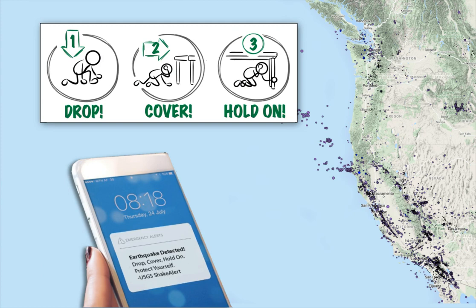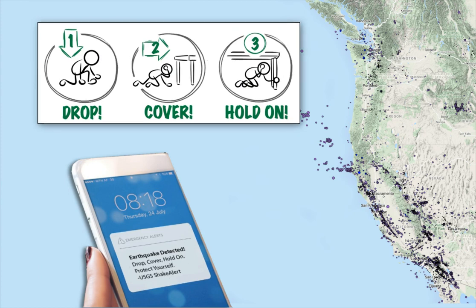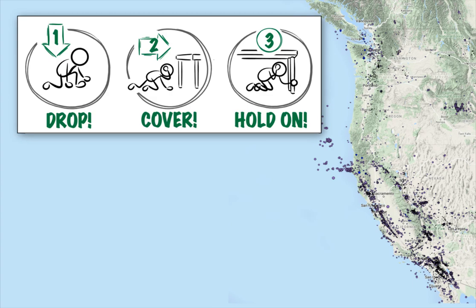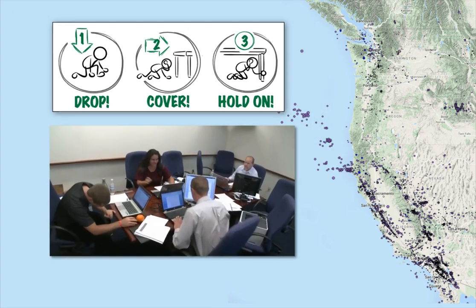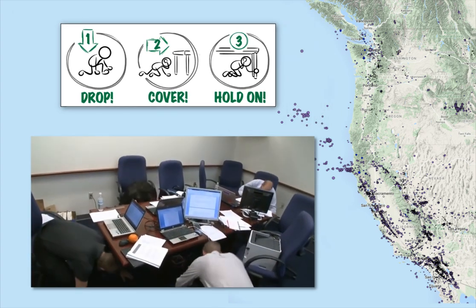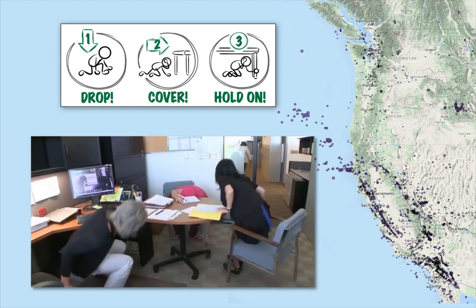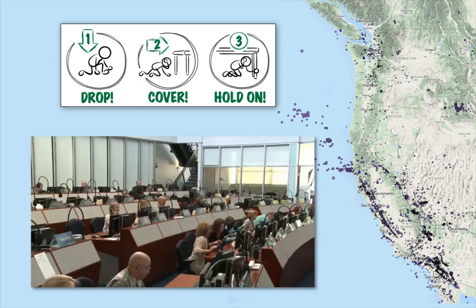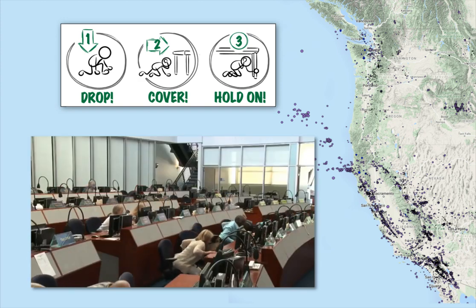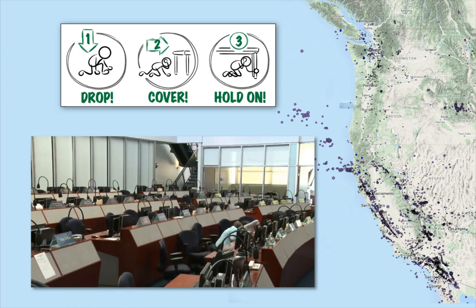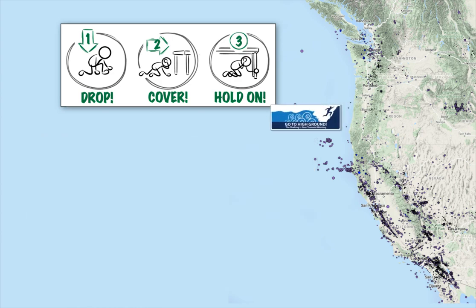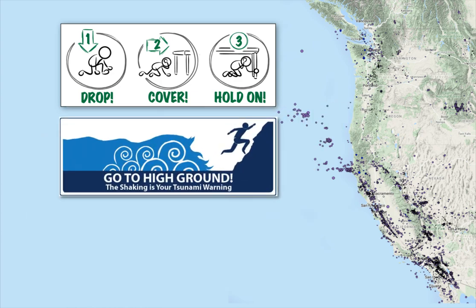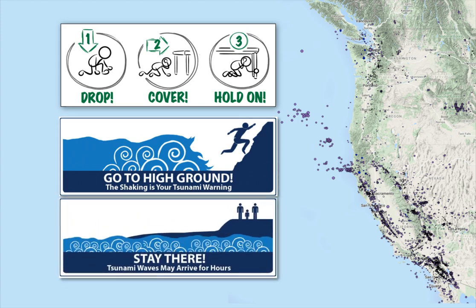The best way to protect yourself is to drop, cover, and hold on. Quickly get low to the ground, cover your head and neck, take cover under a sturdy desk or table if possible, and hold on to your cover until the shaking stops. If you are on the coast or in a tsunami-prone area, quickly move to high ground as soon as the shaking stops.